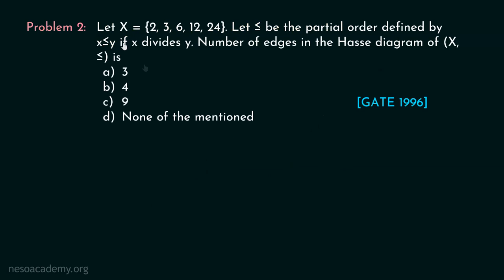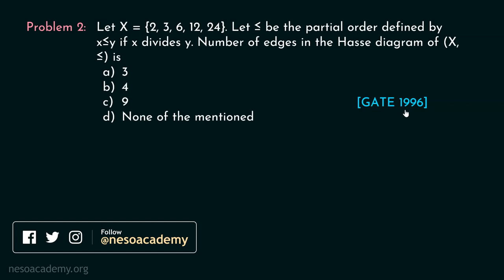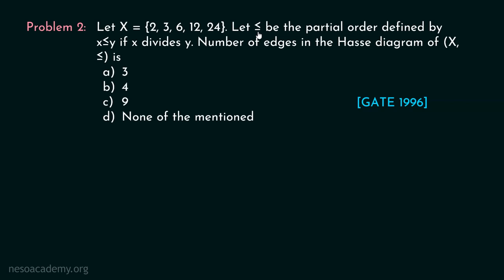Now let's consider problem two. Let X be the set {2, 3, 6, 12, 24}, and let the partial order be defined by x ≤ y if x divides y. The question asks for the number of edges in the Hasse diagram of (X, ≤), with options 3, 4, 9, or none of these. This question was asked in GATE 1996. We need to draw the Hasse diagram for this poset.